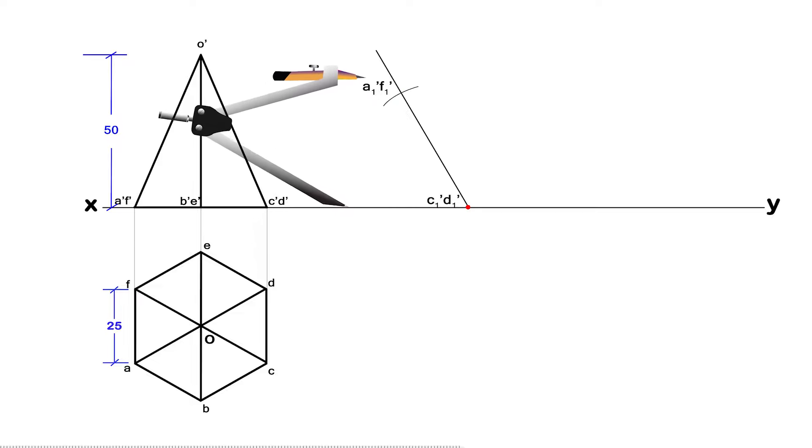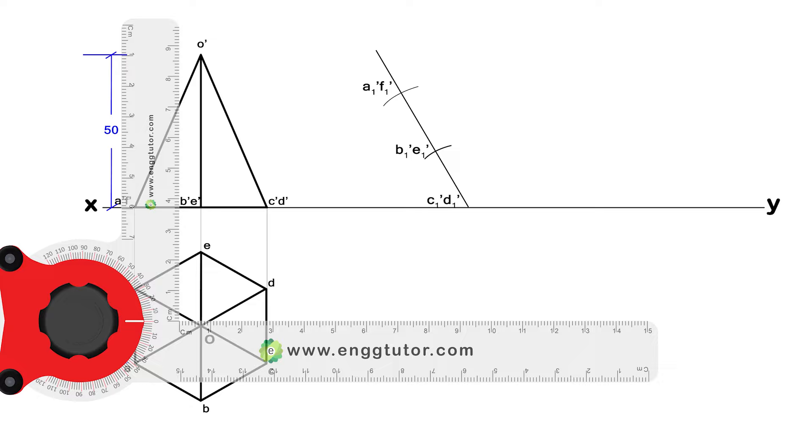Now again, take the compass and put needle of compass at A dash, F dash and take the radius up to B dash, E dash. From C1 dash, D1 dash as center point, cut the arc and name this intersection point as B1 dash, E1 dash.